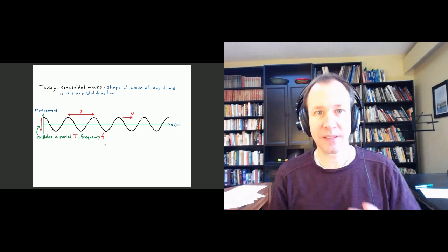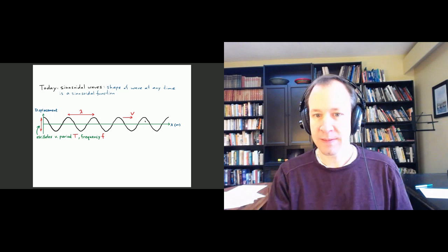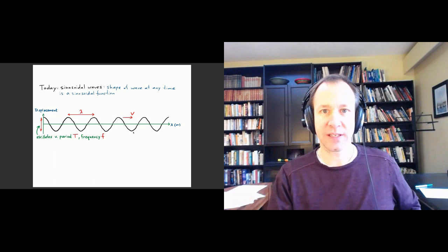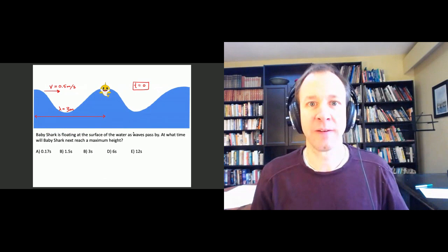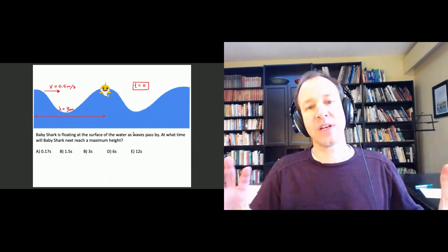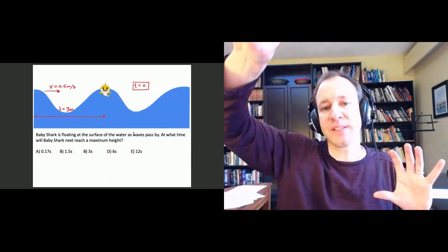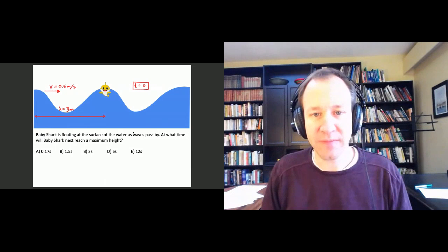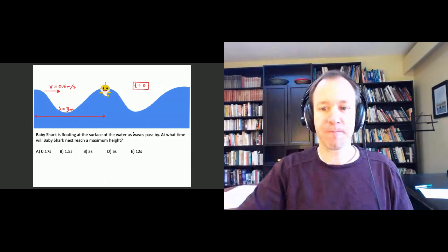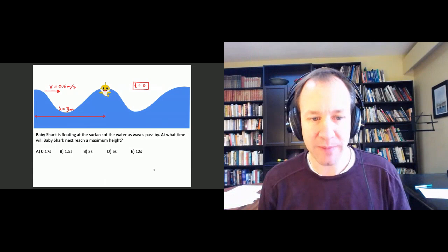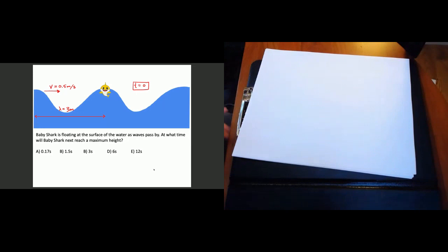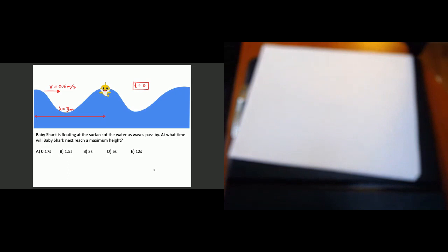The first thing I want to do today is explain an important relationship between the velocity of a wave, the period or frequency, and the wavelength — these are not all independent of each other. To help us understand this, we have Baby Shark. Baby Shark is floating in the water and happens to be right now at the top of a wave. These water waves are moving to the right at 0.5 meters per second, so Baby Shark is bobbing up and down. The question is: at what time will Baby Shark next reach a maximum height?